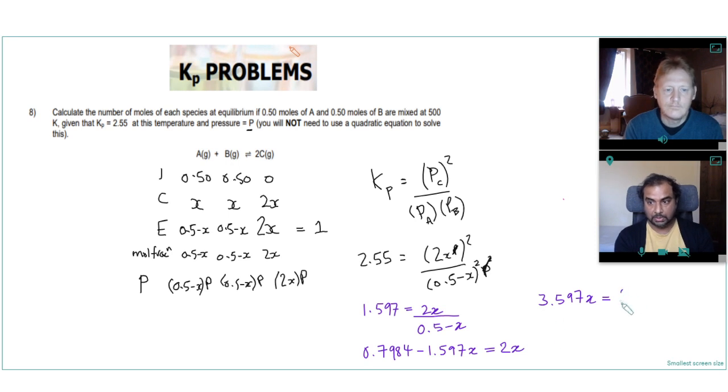I can proceed to solve as a linear equation: 1.597 plus 2 is 3.597x equals 0.7984, giving x equals 0.22, rounding to 2 significant figures.